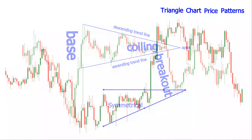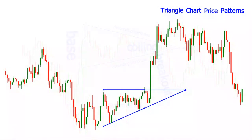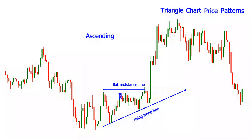The ascending triangle pattern is easily recognized by a rising trend line intersecting with a flat resistance line. It is often regarded by traders as a bullish pattern because the price keeps bouncing off a resistance line that may eventually be broken.